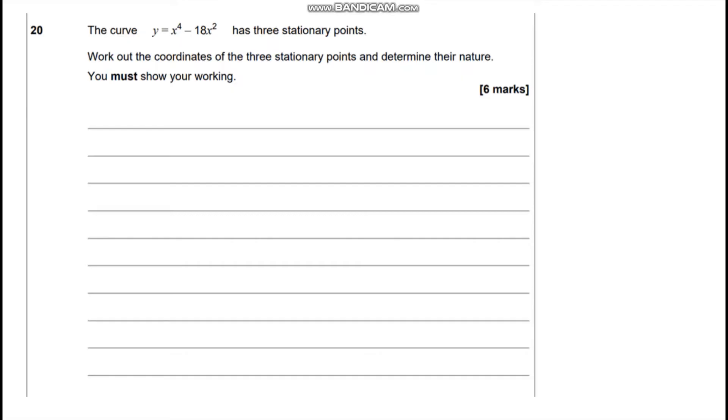In this video we're going to be looking at question 20 of the 2022 paper 1 for the Further Math GCSE. We've been given a curve y equals x to the 4 take away 18x squared and we're told that it has three stationary points. The question asks us to find these three stationary points and in particular the coordinates of these and determine their nature.